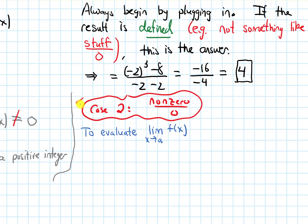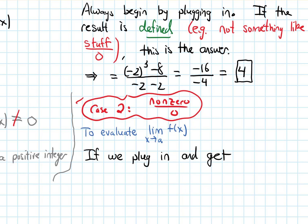In this video, we're continuing to talk about evaluating limits algebraically, and we'll look at case two, which is the non-zero over zero case. The general setup is we're trying to evaluate the limit as x approaches a of f of x. We always start these algebraic evaluations by plugging in, and if doing that gives a fraction with a non-zero number on top but zero on the bottom, then we evaluate the one-sided limits.